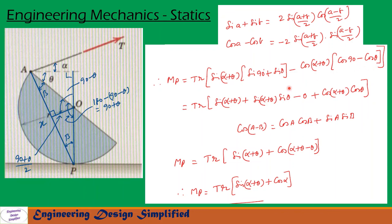Applying the trigonometric identities, and noting that cos(90) = 0, the expression simplifies to Mp = Tr · [sin(alpha+theta) + sin(alpha+theta)·sin(theta) + cos(alpha+theta)·cos(theta)]. Using the identity cos(A−B) = cos(A)cos(B) + sin(A)sin(B), the last two terms become cos(alpha+theta−theta) = cos(alpha). Therefore, the final result is Mp = Tr · (sin(alpha + theta) + cos(alpha)).